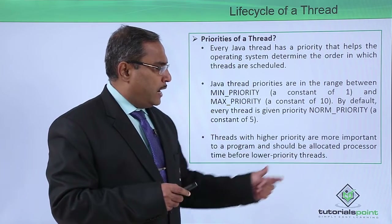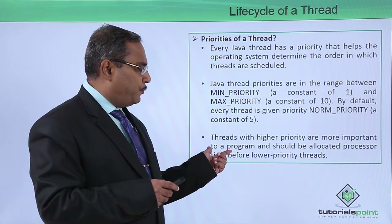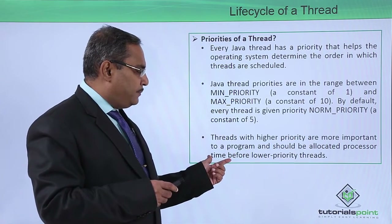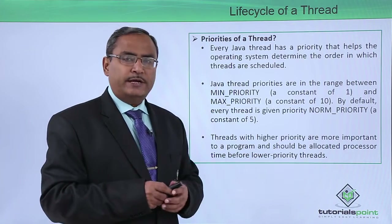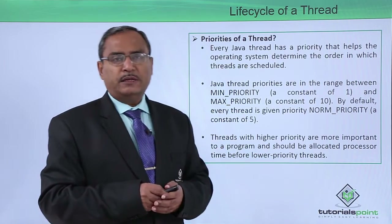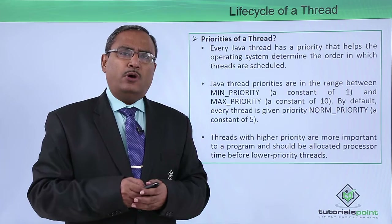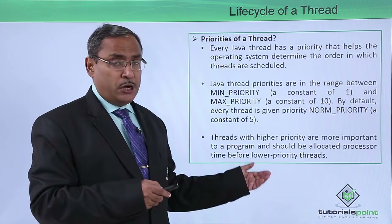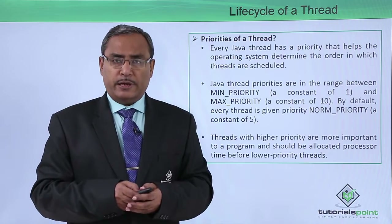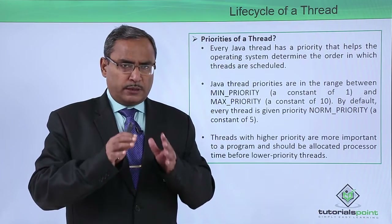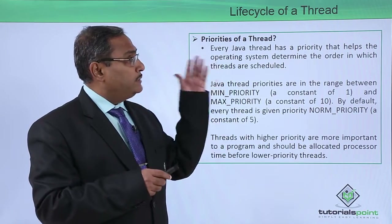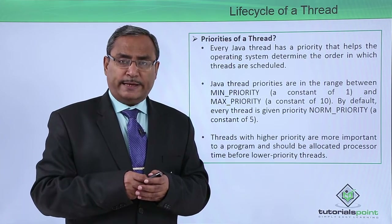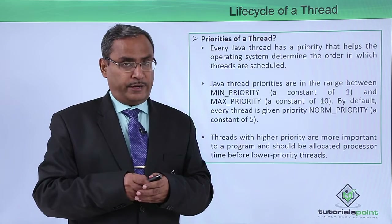Threads with higher priority are more important to a program and should be allotted processor time before lower priority threads get access to the respective resource. The priority is decided by the priority number. Now the concept of the life cycle of a thread, its different states, how state transitions take place, and thread priorities should be clear.